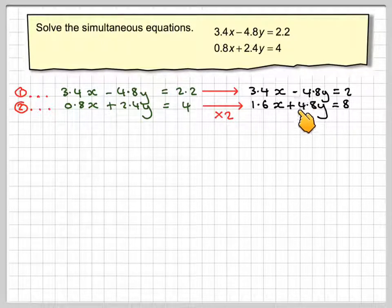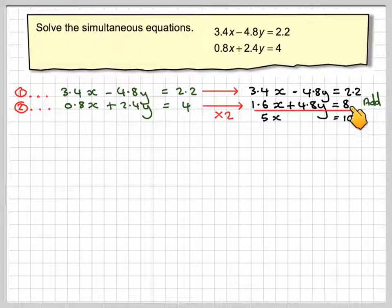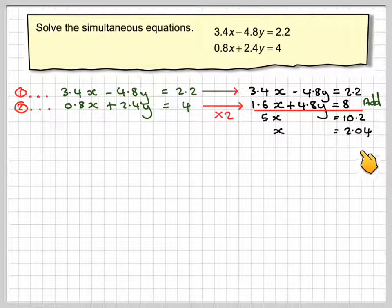Because the signs are different here, we will add them together. So 3.4 plus 1.6 gives me 5x. This bit disappears, and here we get 8 plus 2.2, which is 10.2. So x will be 10.2 divided by 5, which is 2.04.